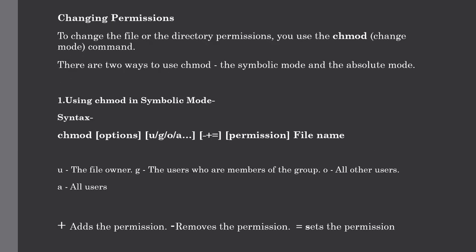Now let me show you how to change permissions to secure your Unix system. To change file or directory permission we use the chmod, or change mode, command. There are two ways to use this command: symbolic mode and absolute mode. The syntax for symbolic mode uses chmod followed by options, then a letter — u for file owner, g for group members, o for all other users, and a for all users.